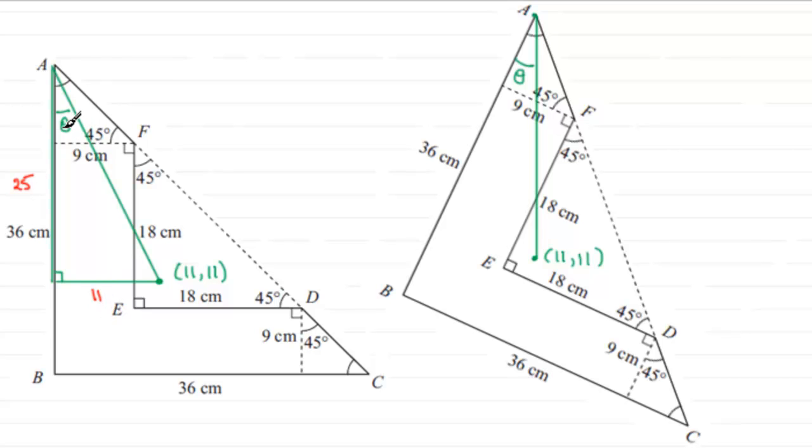So when it comes to working out what angle theta is, very straightforward. All we need to do is just say that the tan of the angle theta, because that compares the opposite side over the adjacent, would equal 11 over 25. And so therefore, theta equals the inverse tan of 11 over 25. And if you work that out, you're going to get 23.749 and so on degrees. And we're asked to give this to the nearest degree, so it'll be 24 degrees to the nearest degree.